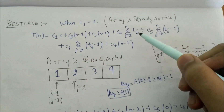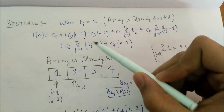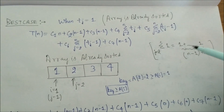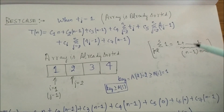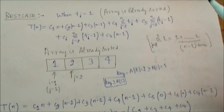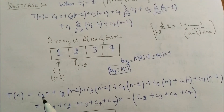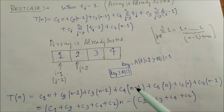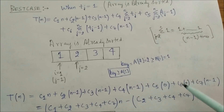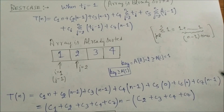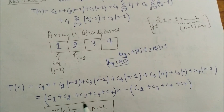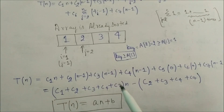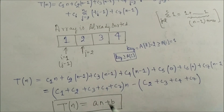Substituting tj = 1, the summation Σ(j=2 to n) 1 = n−1, and Σ(tj−1) = 0. The total time becomes T(n) = c1·n + c2·(n−1) + c3·(n−1) + c4·(n−1) + c5·0 + c6·0 + c7·(n−1), which is a linear function of n. So in the best case, the running time is linear.